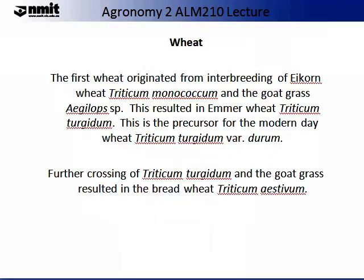So let us start with the basics about wheat. Wheat first originated from interbreeding of Einkorn wheat, Triticum monococcum, and the goat grass, Aegilops species. This resulted in Emmer wheat, Triticum turgidum. This is the precursor for the modern day wheat, Triticum turgidum variety Durum.